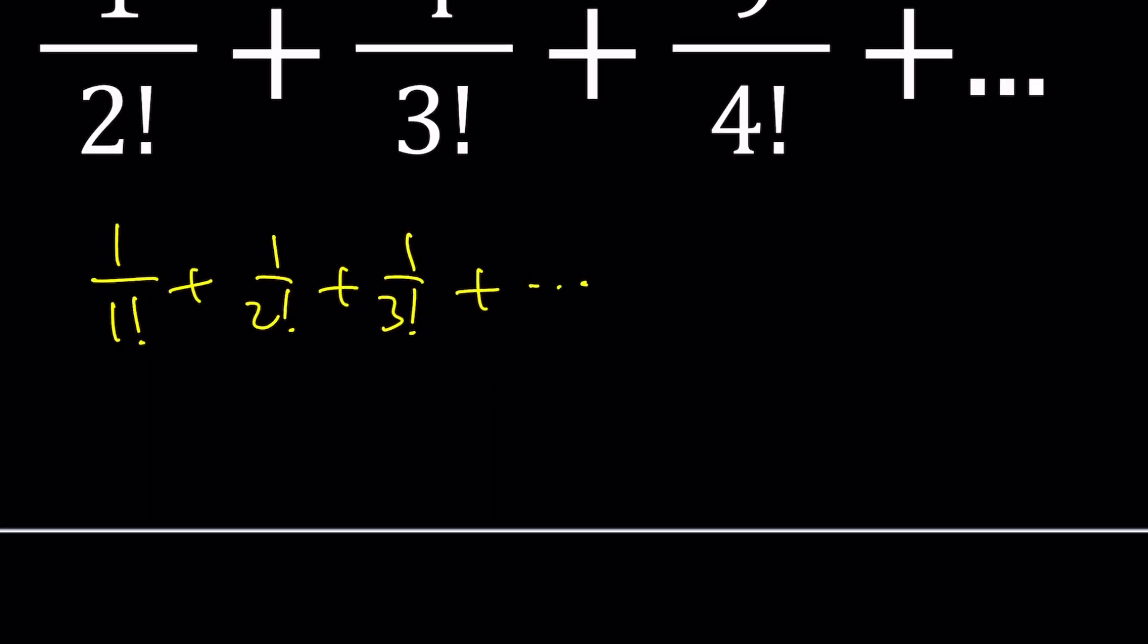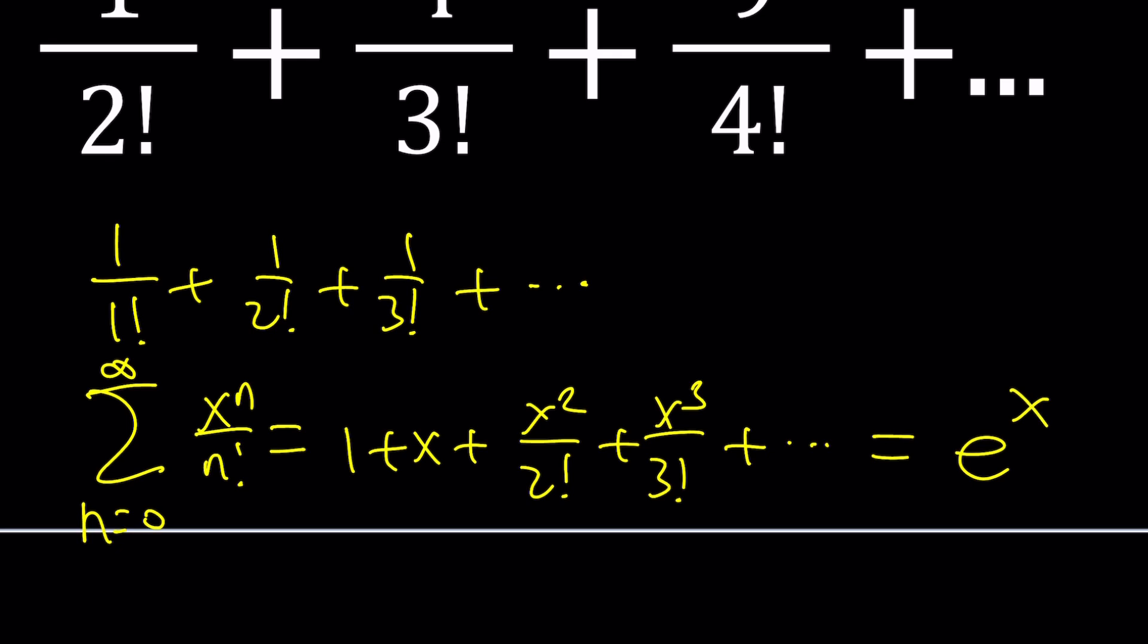Let me tell you. There's a formula that we're going to be using. If you have the sum from n equals 0 to infinity of x to the n divided by n factorial, which can be written as 1 plus x plus x squared over 2 factorial plus x cubed over 3 factorial, and so on, this can be written as e to the power x. And of course, e to the power x will converge for finite values of x.